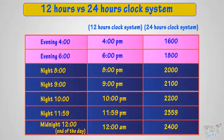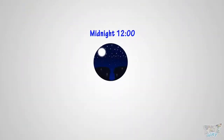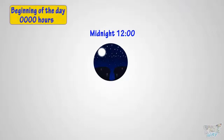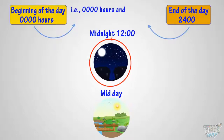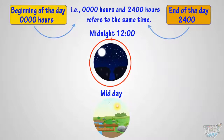So kids, the 24-hour day starts at midnight 12, which is called 0 hours in the 24-hour clock, and ends at 2400, which is the 0 hour of the next day. That is, 0000 and 2400 refer to the same time — 0 hours is the beginning of the day and 2400 is the end of the day and the beginning of another day.